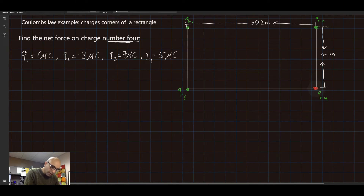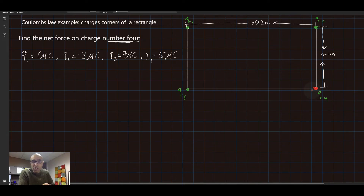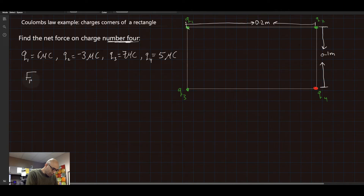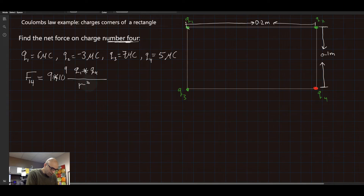I'm going to mark charge four in red to distinguish it, because this is where we need to find the net force. We have three other charges influencing this one. The idea is to find the magnitude and direction of each force from each charge, and then use trigonometry to find the net force. Let's find the force from charge one on charge four — F1 on 4. Coulomb's Law gives us nine times ten to the nine, times Q1 times Q4 divided by the distance squared.